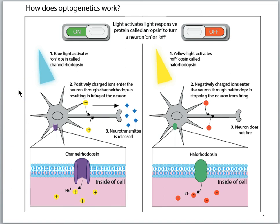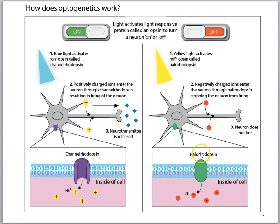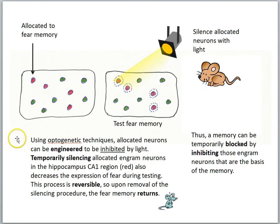The optogenetic technique can be used to activate or inhibit cells. Blue light activates cells by activating the channelrhodopsin protein, allowing positively charged ions like sodium into the cell, which depolarizes and activates it. Other proteins respond to a different color of light — yellow light — allowing negatively charged ions into the cell, which hyperpolarizes and inhibits it. So blue light can activate cells and yellow light can inhibit them, depending on which protein channel is present.